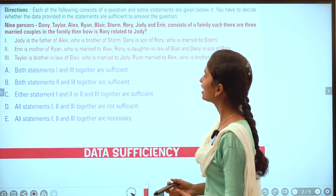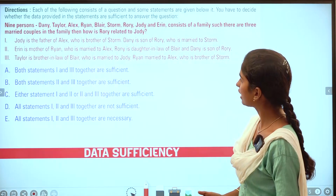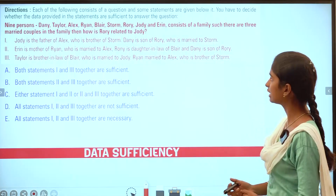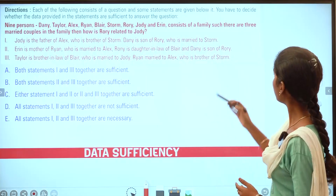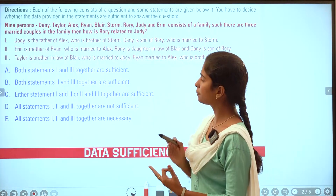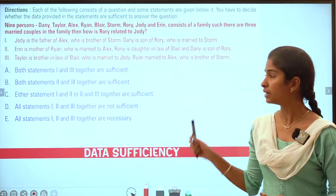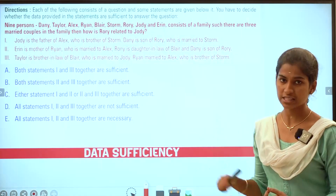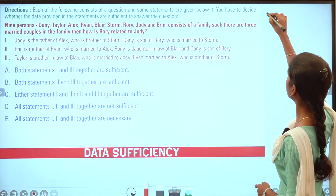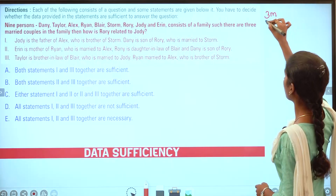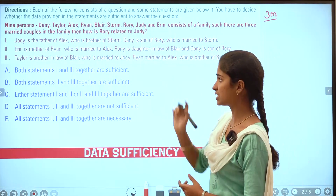Now the question: there are 9 persons — Danny, Taylor, Alex, Ryan, Blade, Strong, Rory, Jody, and Erin. They are two cousins in one family, and there are 3 married couples. Let's go to the first statement.